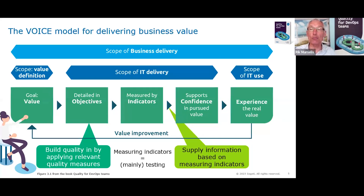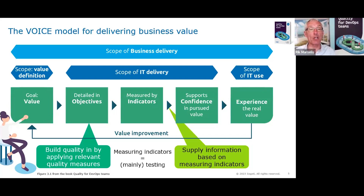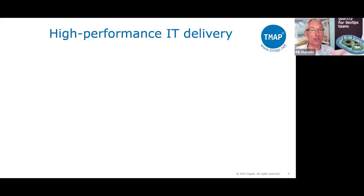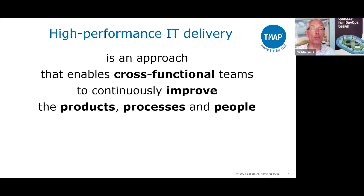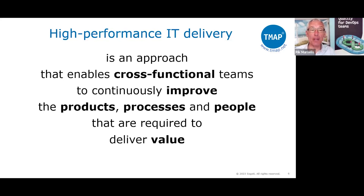We call this the VOICE model — Value, Objectives, Indicators, Confidence, and Experience. This model applies not only to DevOps but also to Scrum, where you have a value improvement loop of two weeks in a sprint, or to traditional IT delivery where the loop may be longer. High-performance IT delivery is an approach that enables cross-functional teams to continuously improve the products, processes, and people required to deliver value — it's not just about creating IT products, but also improving delivery processes and people simultaneously.